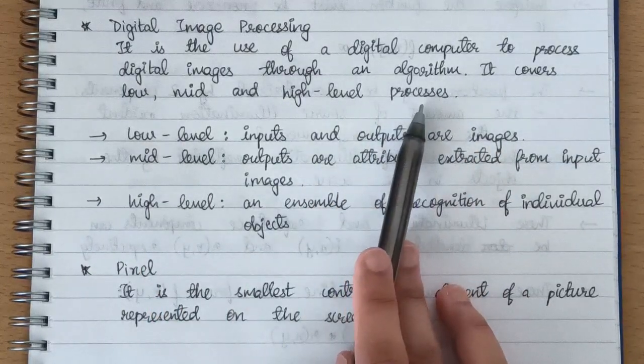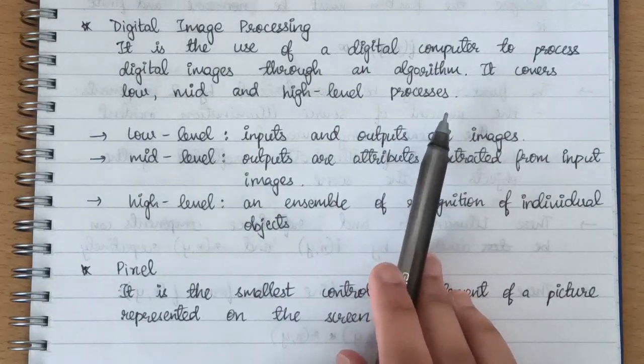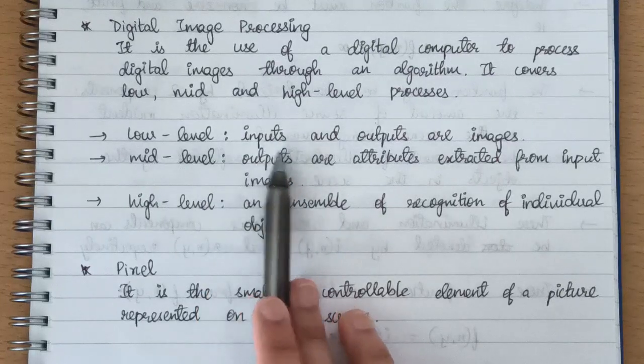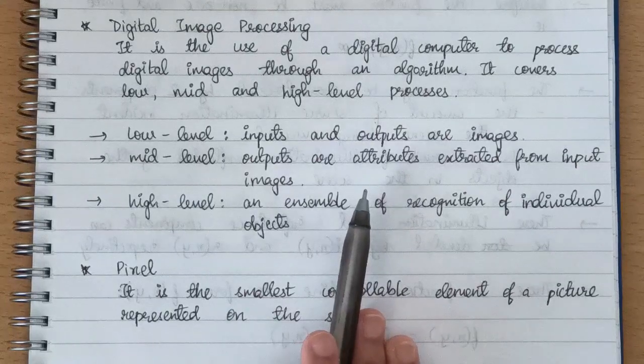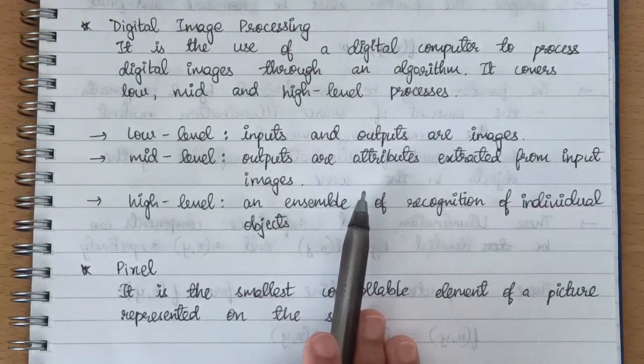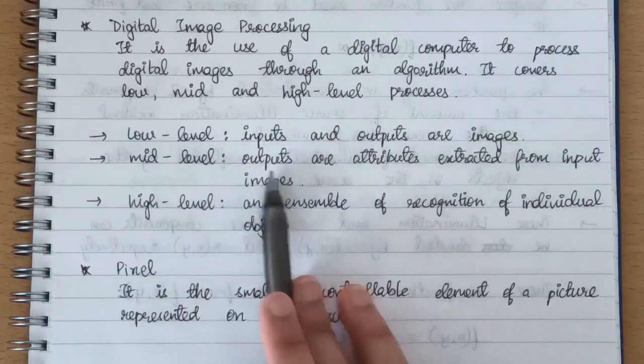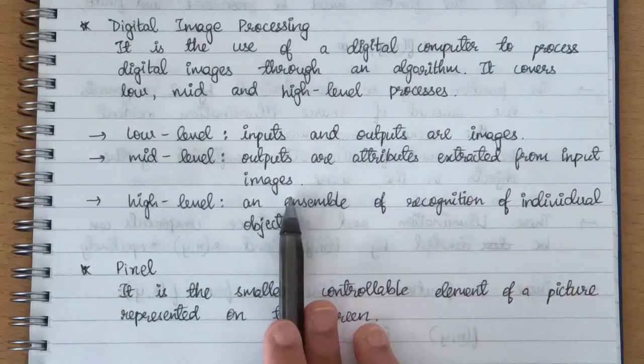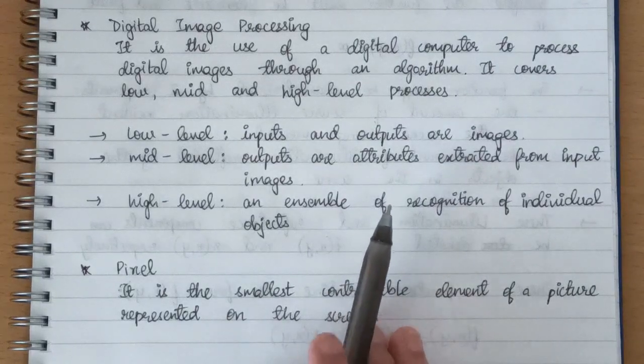Suppose our application is noise removal or image sharpening, that is when we use low-level processes because here the inputs and outputs both are images. Suppose our application is object recognition or segmentation, so in that case we need certain attributes of the input image, and that is why we use mid-level processes because here the outputs are attributes extracted from input images. If our application is scene understanding or autonomous navigation, then that is where we use high-level processes because here an ensemble of recognition of individual objects is used.